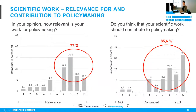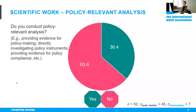Looking at some results — from the mostly academic respondents — 77% said they find their work relevant for policymakers, and 86.6% said their work should contribute to policymaking. However, when asked whether they actually conduct policy-relevant analysis, 63.6% said no. There's a gap: most scientists think their work is relevant to policy and should contribute, but there seems to be a failure to actually engage at the science-policy interface and conduct policy-relevant analysis themselves.